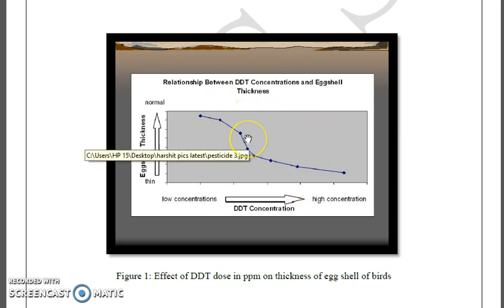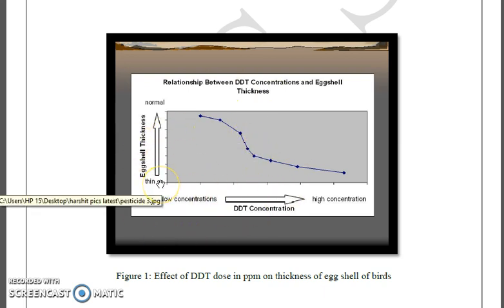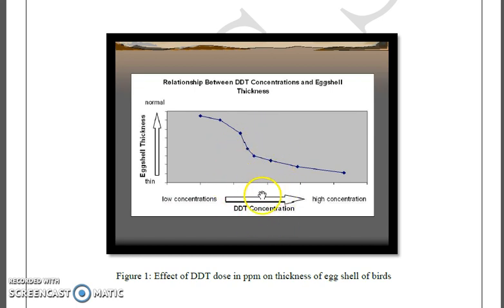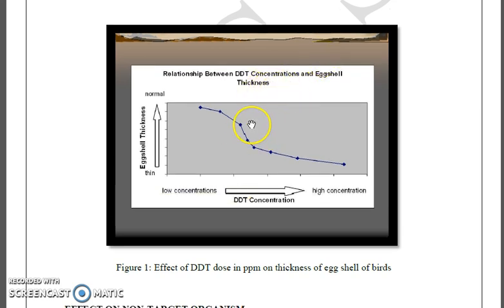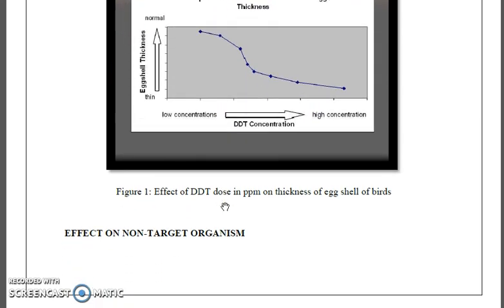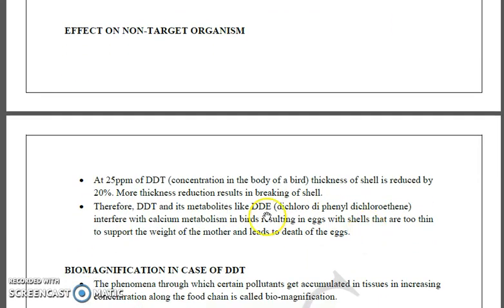At 25 ppm of DDT there is around 20 percent reduction in shell thickness, and beyond that there will be more reduction. DDT and its metabolite DDE (dichlorodiphenyldichloroethylene) both interfere with calcium metabolism in birds, resulting in eggs with shells that are too thin to support the weight of the incubating mother. When birds try to incubate their eggs, the eggs break earlier, leading to the death of the embryo.